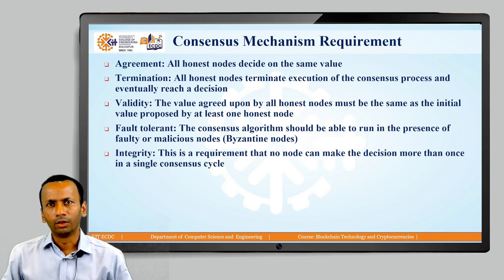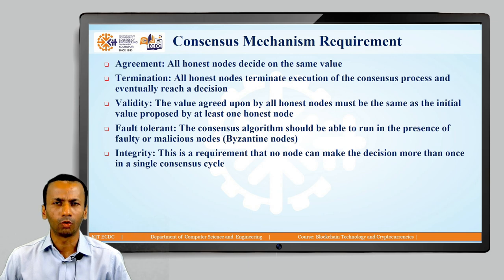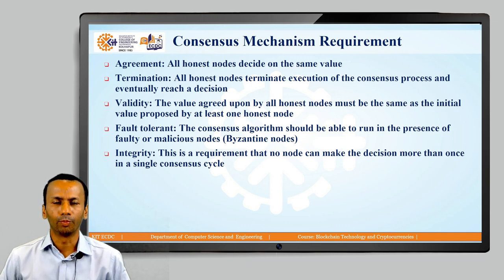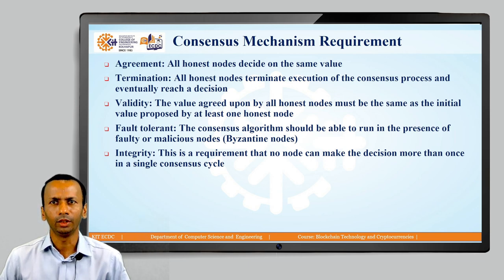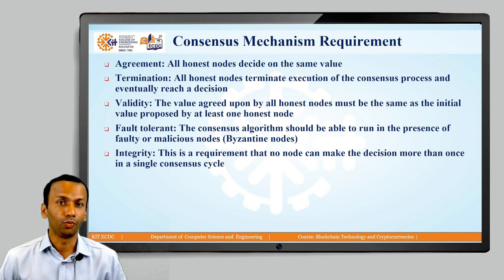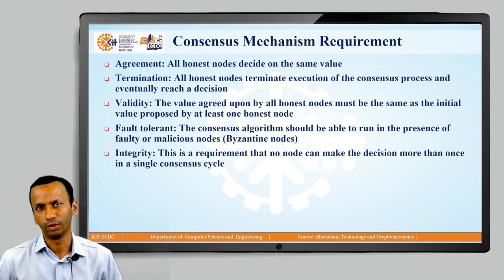The fourth requirement is Fault Tolerance — the consensus algorithm should be able to run even in the presence of faulty or malicious nodes. If a node goes down due to some technical or unexpected issue, it becomes faulty. Even in that case, the consensus algorithm must be able to run. This is a very important requirement.